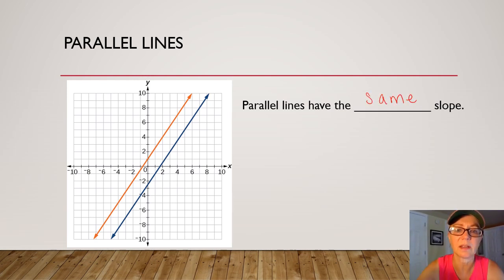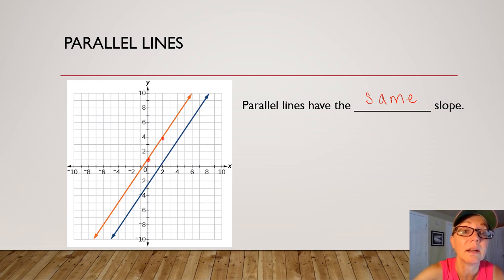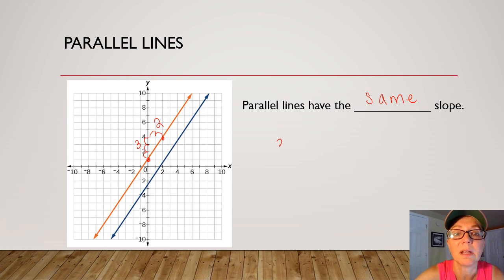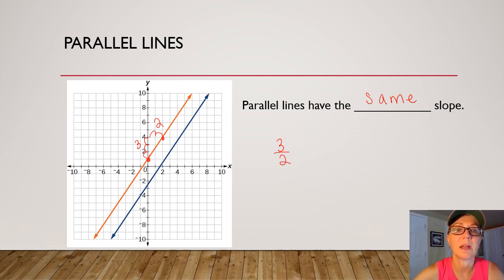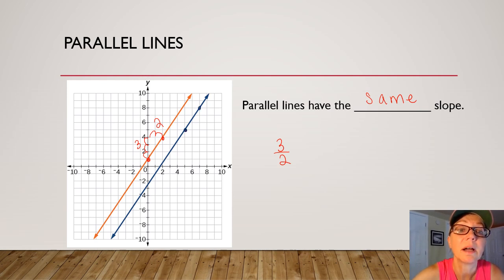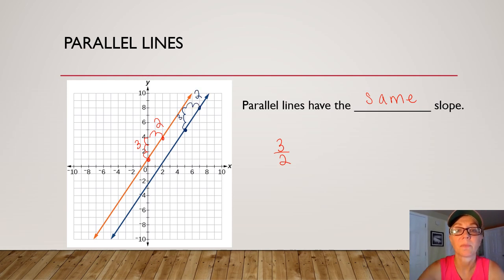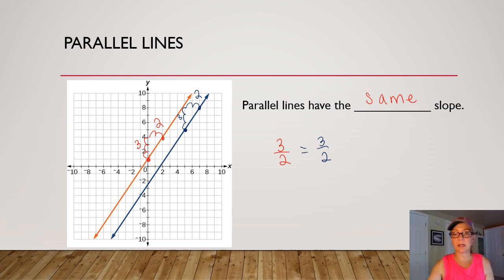We can check that out very quickly by picking two points on the line. I rise three, I run two, and that gives me a slope of the red line of three halves. And now I'm going to pick two points on the blue line. Notice I rise three and I run two on the blue line as well. So if two lines have the same slope, they are said to be parallel.